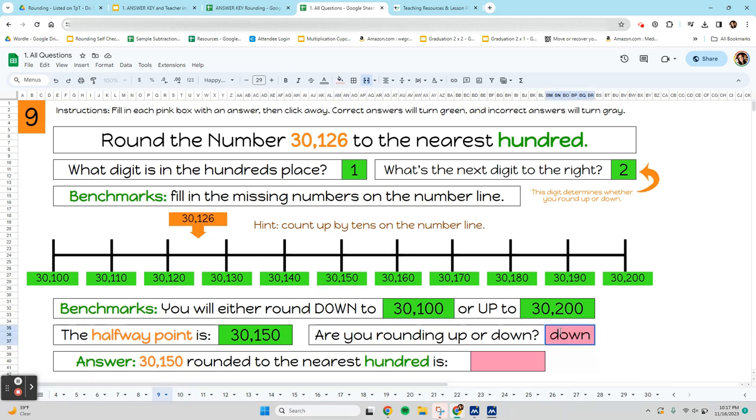So, click and type the word down and click away. And so, if you're rounding down, that means your answer is 30,100. Your answer is always going to be either this or this. If you're rounding down, you go down to this one. If you're rounding up, you go up to this one. And it's all determined by where this number is. If it's below the halfway point, you're rounding down. And if it's above the halfway point, you're rounding up.